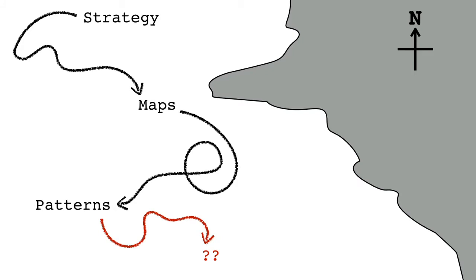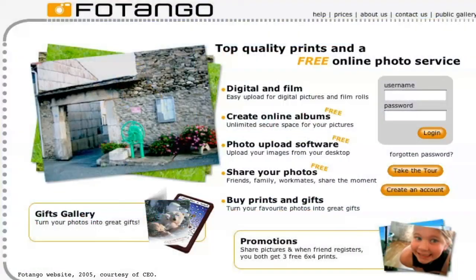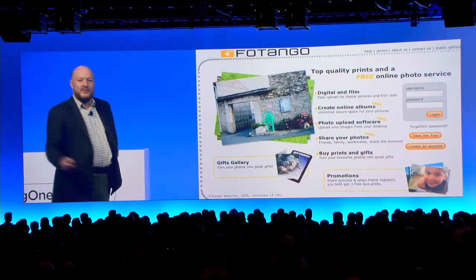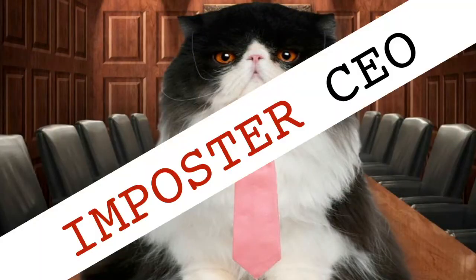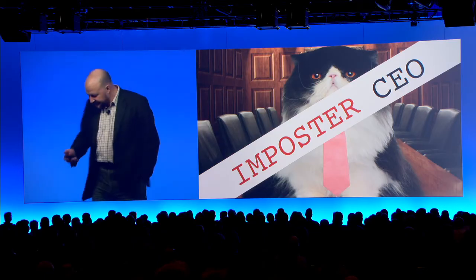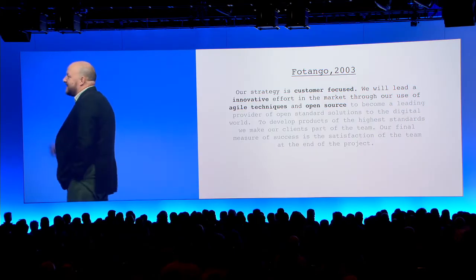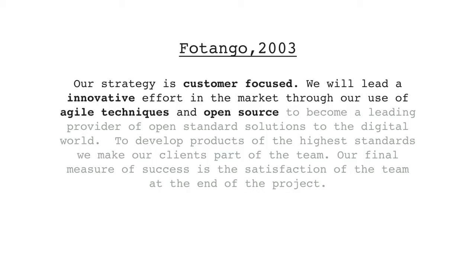So I'm going to start with strategy. Personal experience for me — I worked at this company, Tango. This was 2005, online photo service, millions of users, rapidly growing, very profitable. But we had a problem, and the problem was the CEO. The CEO was an imposter. Didn't know what they were doing. And I knew this because I was the CEO. I mean, we had vision statements: 'Our strategy is customer focus. We will lead an innovative effort of the market through our use of agile techniques and open source.' This is 2003. But I pinched this from other people.